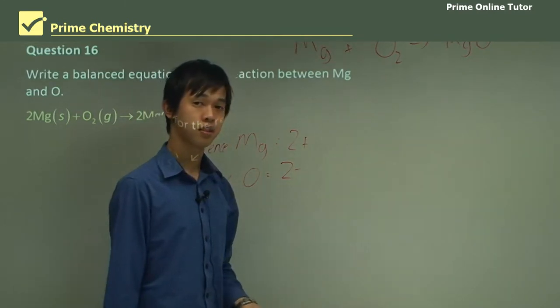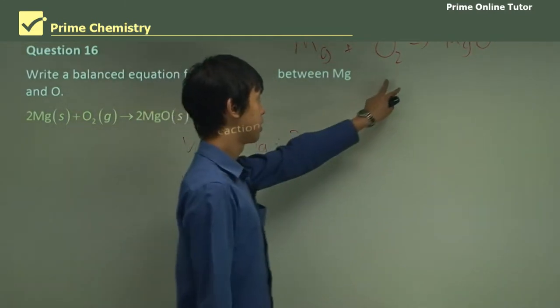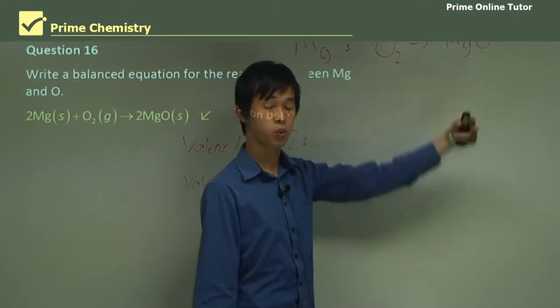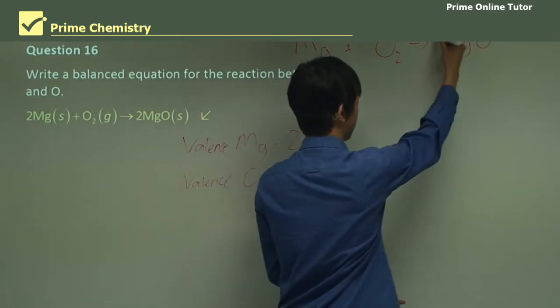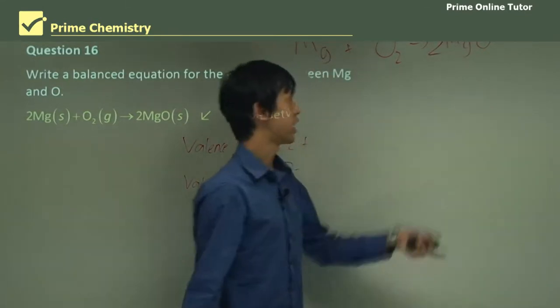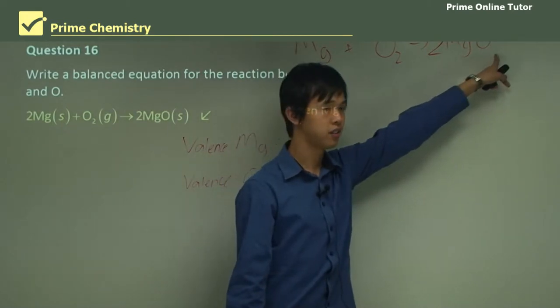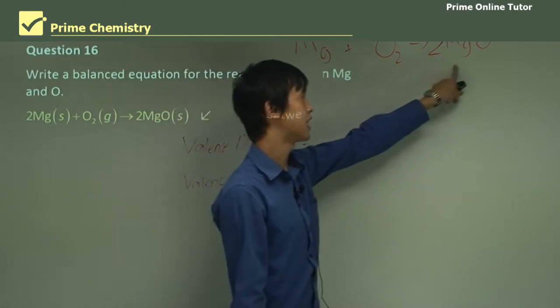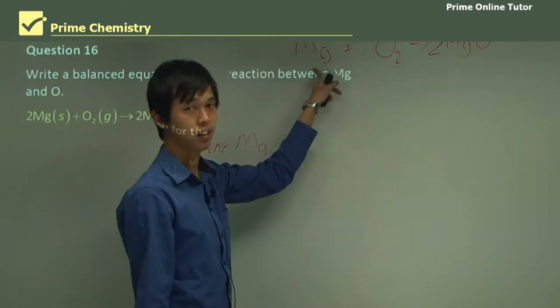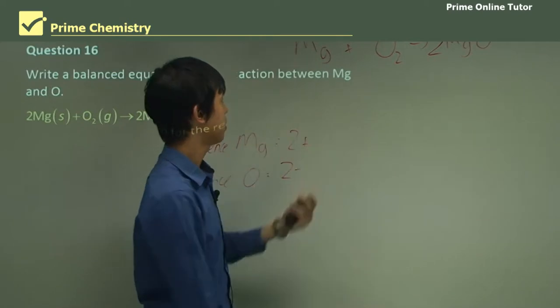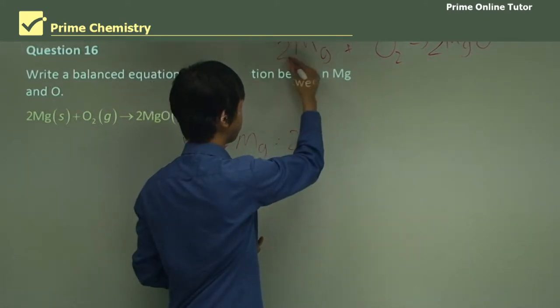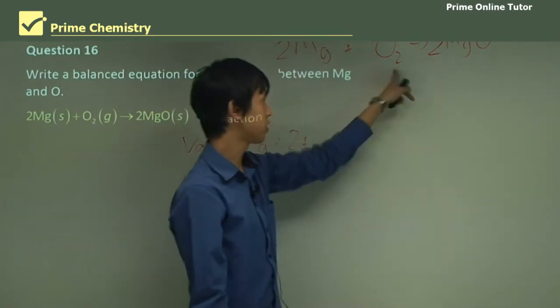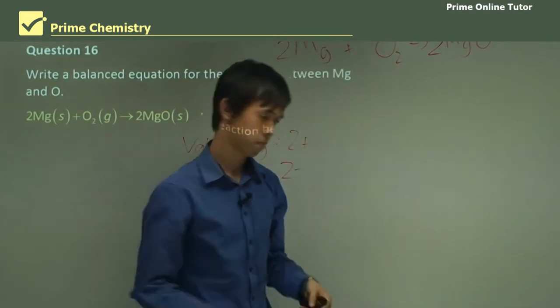So now we balance, and it's quite simple. You've got two oxygens on this side, one oxygen on this side. So what do I do? Well, I just multiply this side by 2. So now I've got 2 oxygens on this side, 2 oxygens on this side, and that balances. But now I've got 2 magnesiums on this side, and 1 magnesium on this side. So all I have to do is multiply this one by 2. I've got 2 magnesium, 2 magnesium, 2 oxygen, 2 oxygen, so it's balanced up.